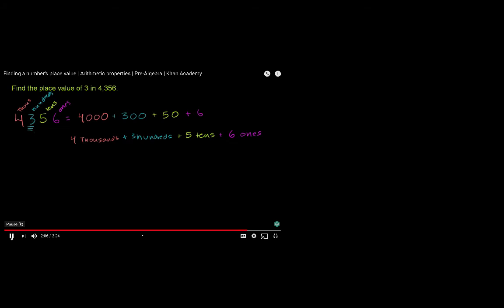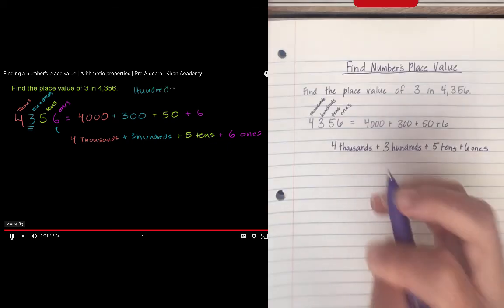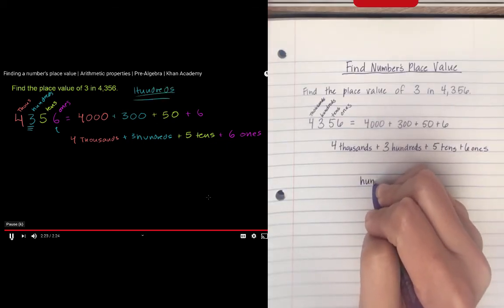If there was a 4 here, that would mean we're dealing with 400. If there's a 5, 500. It's the 3rd from the right. This is the ones place. That's 6 ones, 5 tens, 300. So the answer here is it is in the hundreds place.